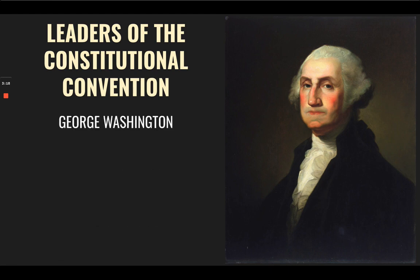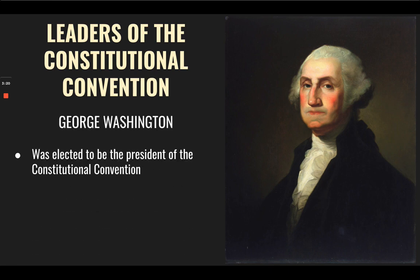Next, we have George Washington. He was elected to be the president of the Constitutional Convention. Don't get that confused with President of the United States — at this time, we are still under the Articles of Confederation and do not have a president. But he was elected president of the actual convention itself.